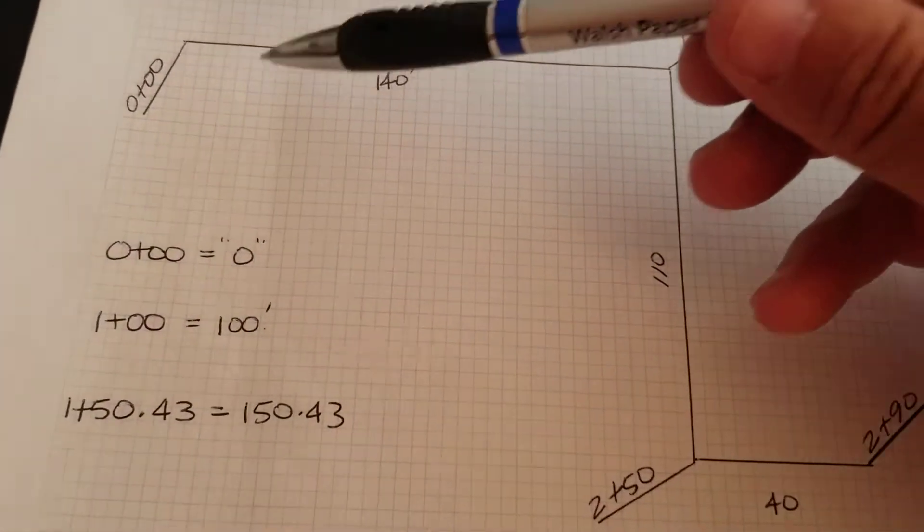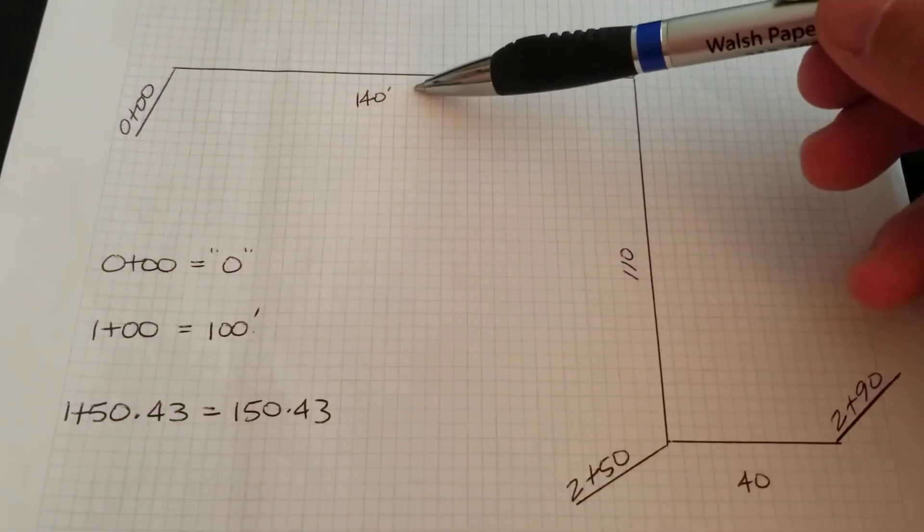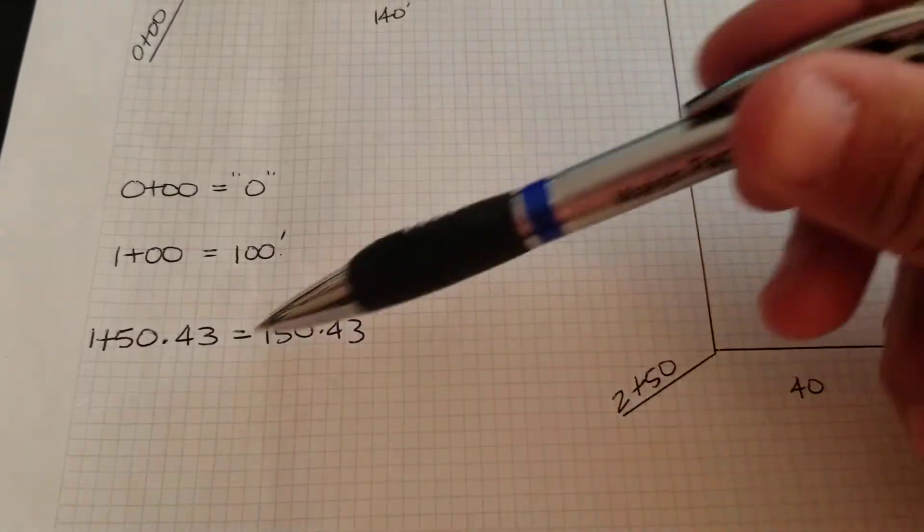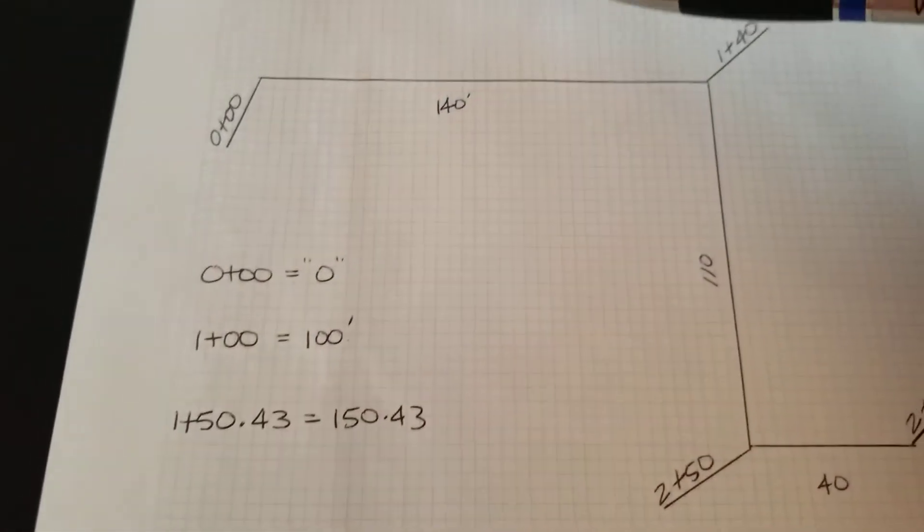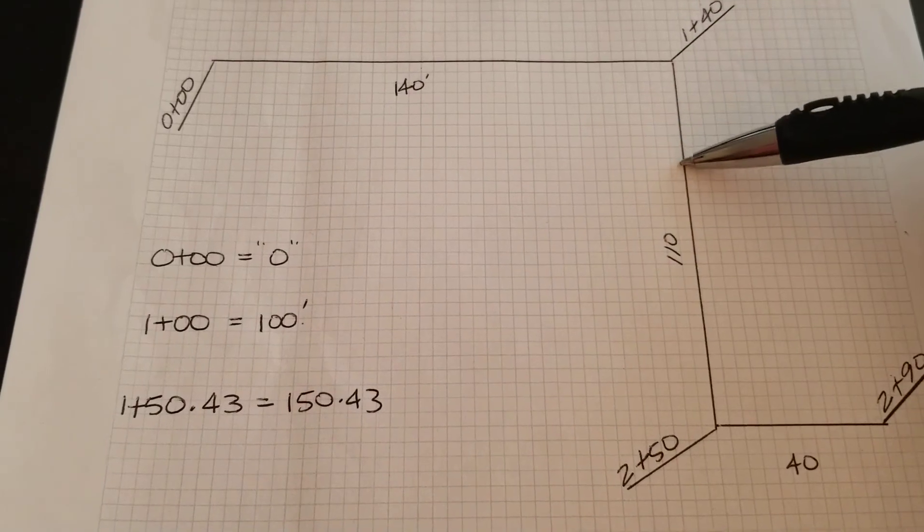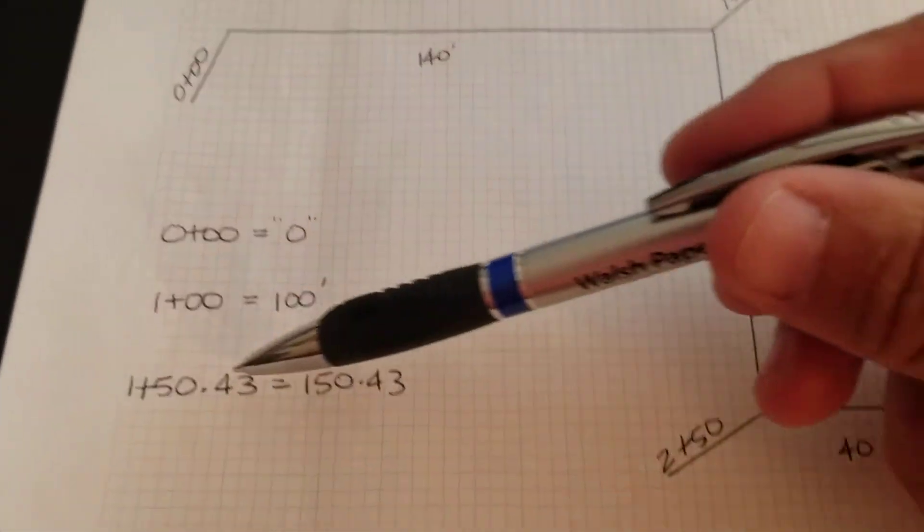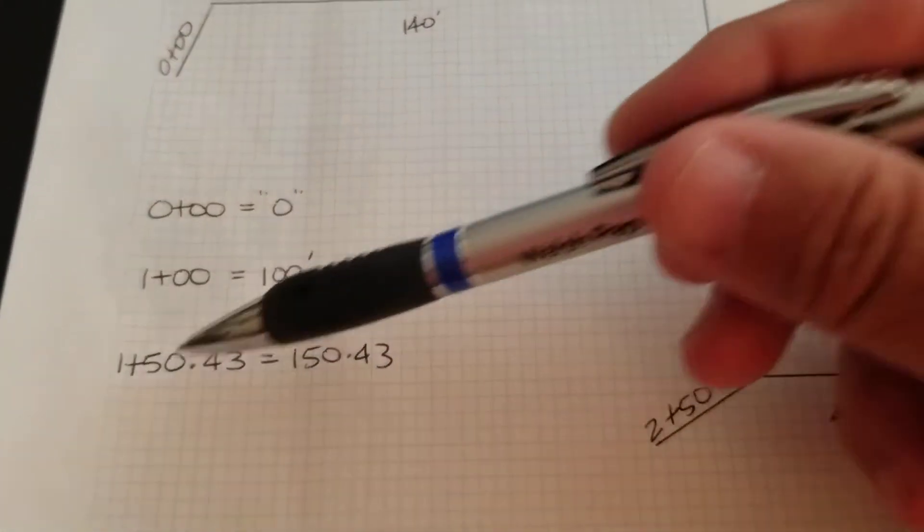So as you're doing your calcs and your grades and stuff, you need to do like every 25 foot station. Maybe there's a grade break in here with the decimal of feet. So let's say there was a grade break at 1+50.43. That just means along this line, so 140 would be here, 150 you'd be somewhere in here. That's how you'd write out 150.43 feet - it's 1+50.43.